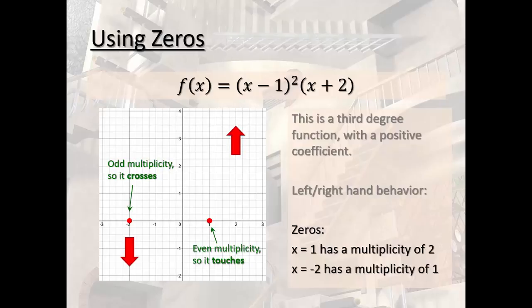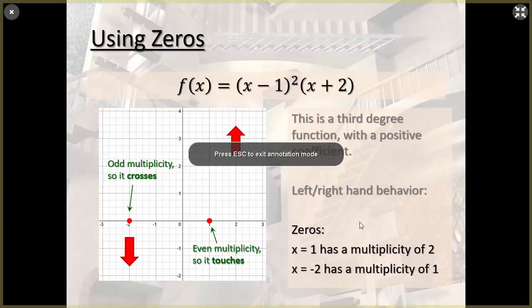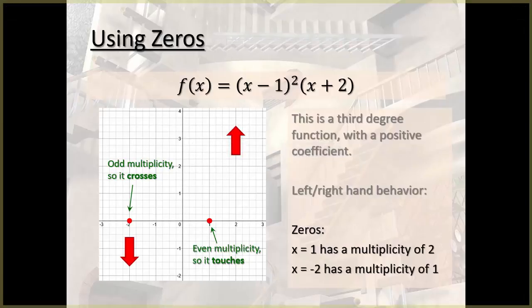That tells us a lot about how to graph this problem. Because if you think about it, we know that it crosses here, so it's going to be going down like that. And we know that it touches here, so it's just going to be going like this. How do we know that it's touching here instead of, say, there?